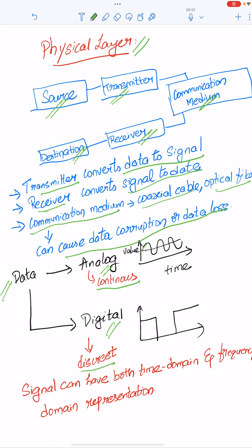In analog, the value continuously changes over time, but in digital the value is constant over a small time period and varies after that. The signal can have both time domain and frequency domain representation.